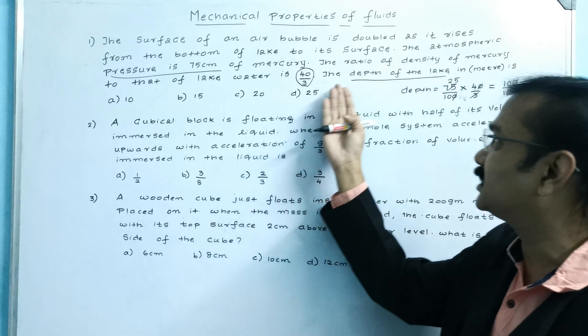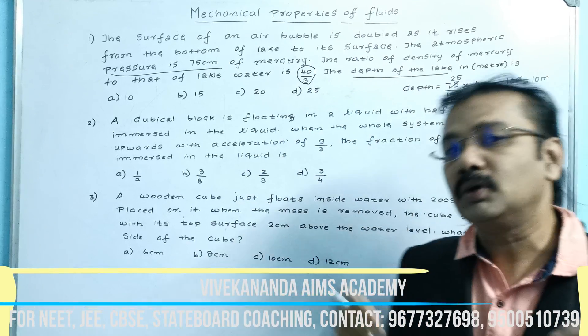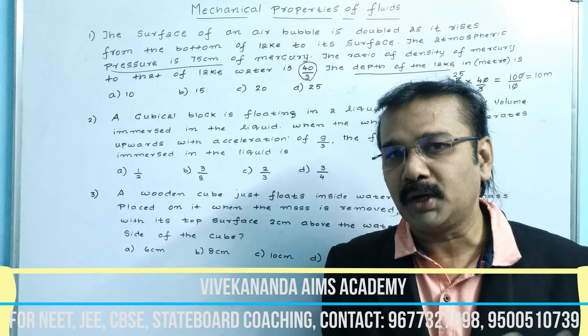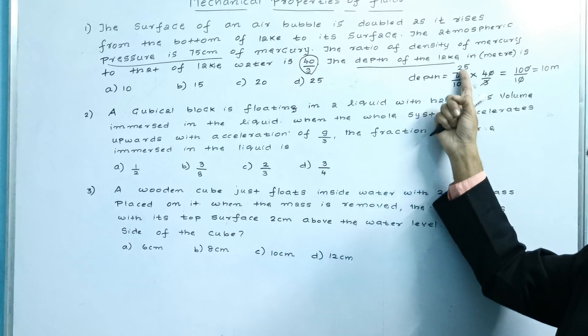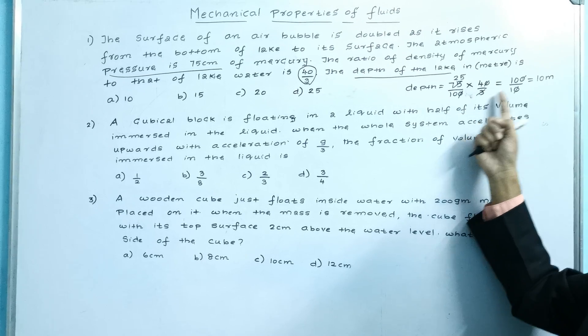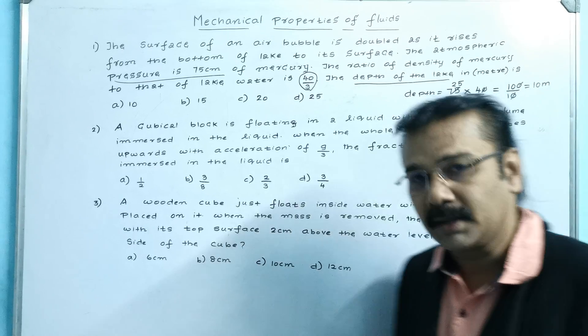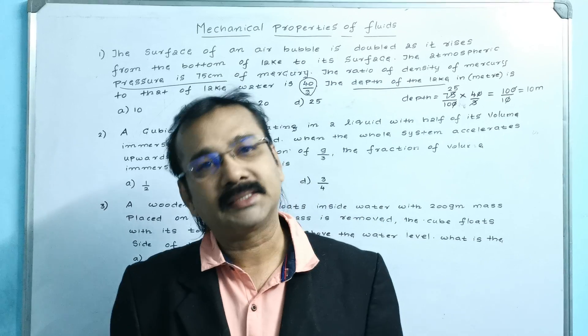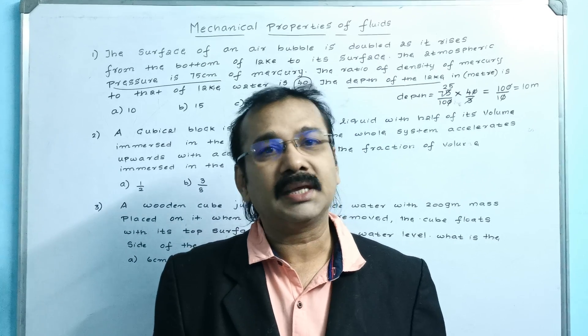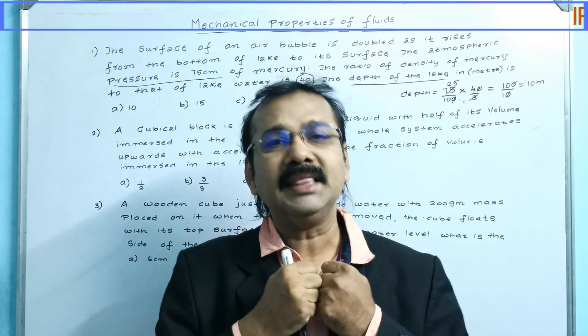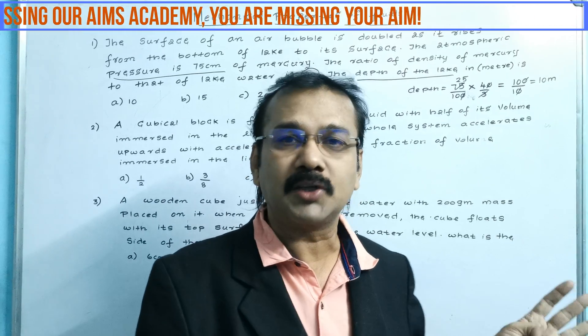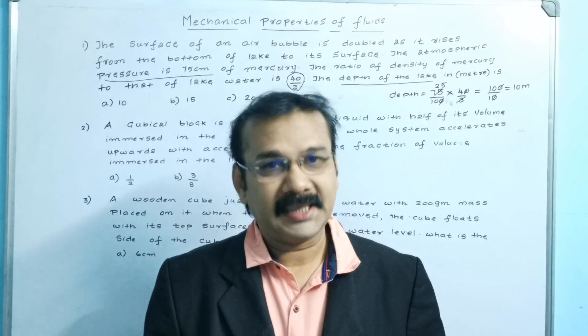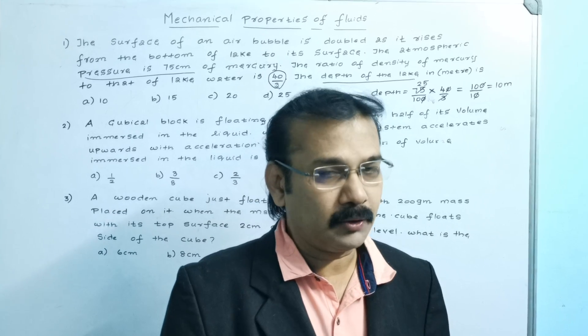So to find the depth, just multiply these two numbers: 75 by 100 into 40 by 3, and you get 10 meter. You can use this shortcut trick to get the answer immediately. Now let us move on to the second question.